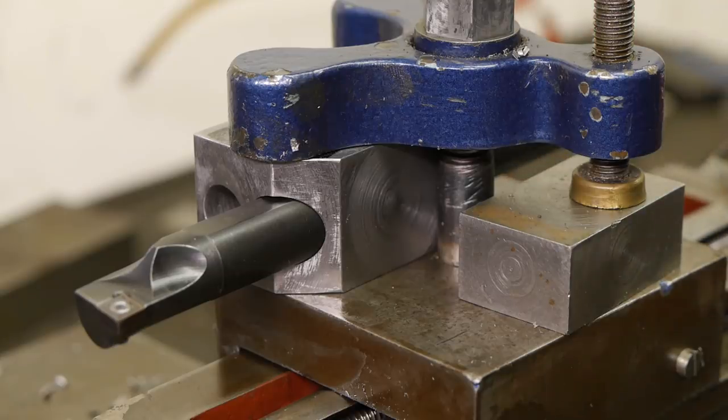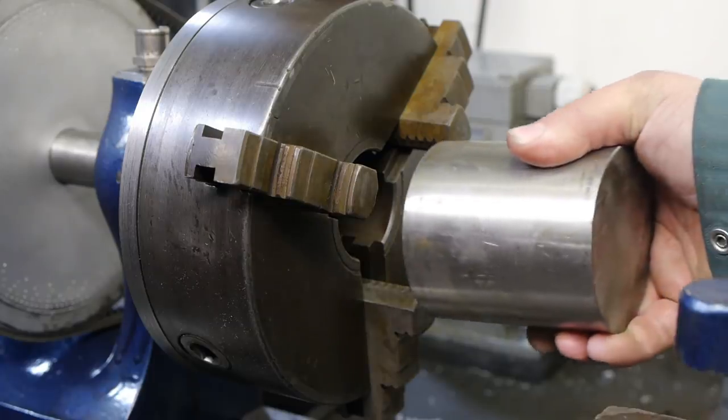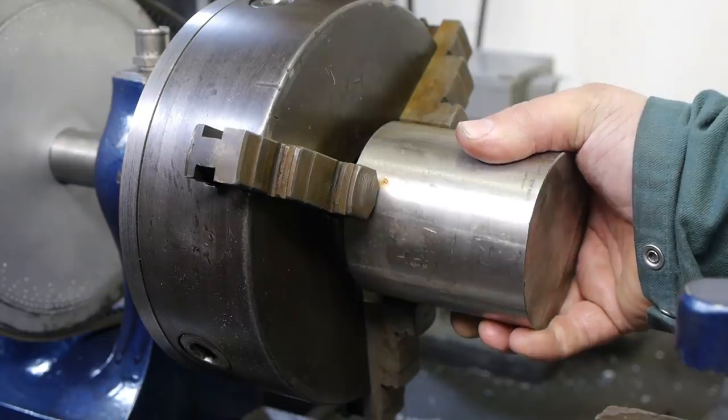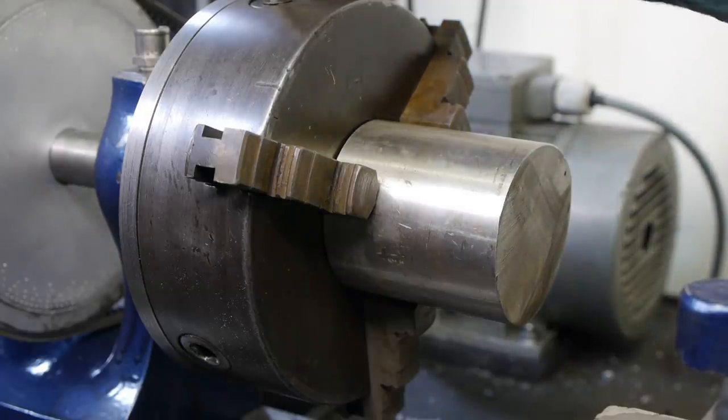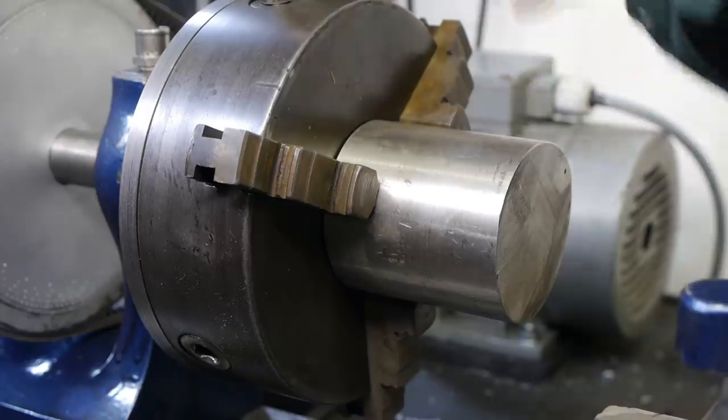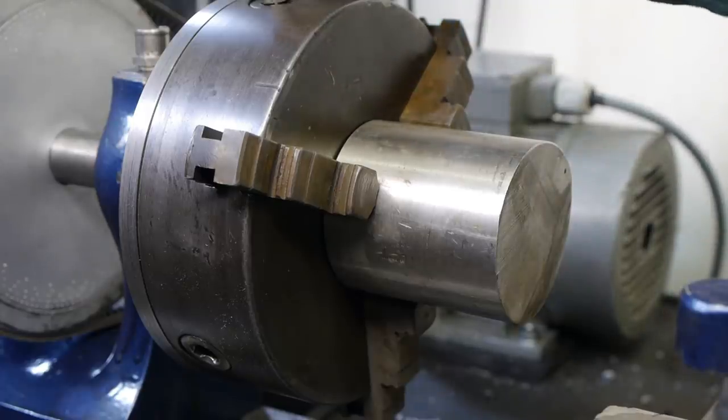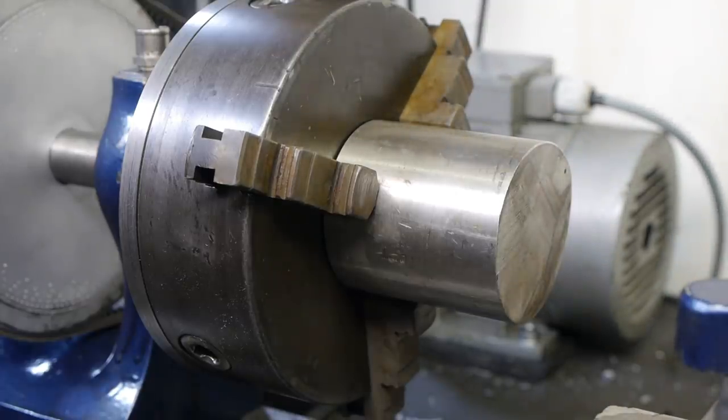But first I need to test another one of those M42 cobalt drill bits. This here is a piece of stainless scraptonium that I found at the local scrapyard. And we all know that stainless is fairly hard, so let's try and punch a hole through this with those fancy drill bits.